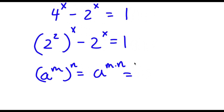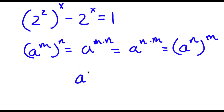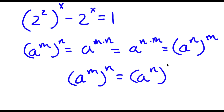And m and n are interchangeable, meaning this is also equal to a to the power of n times m. And if a to the power of m times n equals a to the power of m to the power of n, this means that a to the power of n times m equals a to the power of n to the power of m. So in simpler terms, a to the power of m to the power of n is equal to a to the power of n to the power of m.